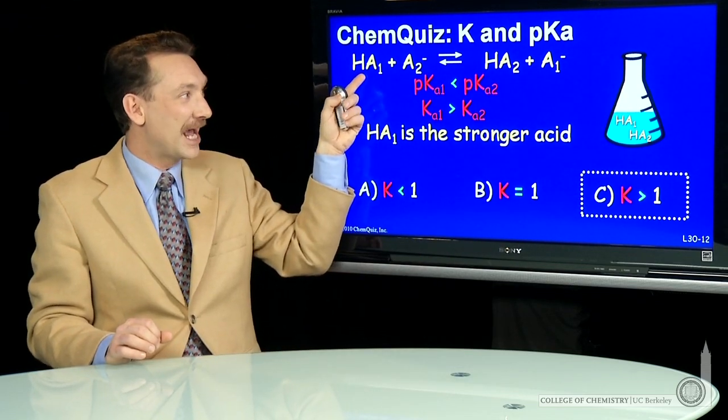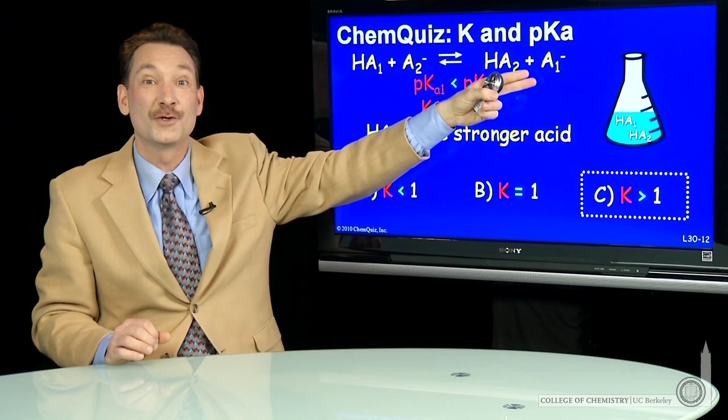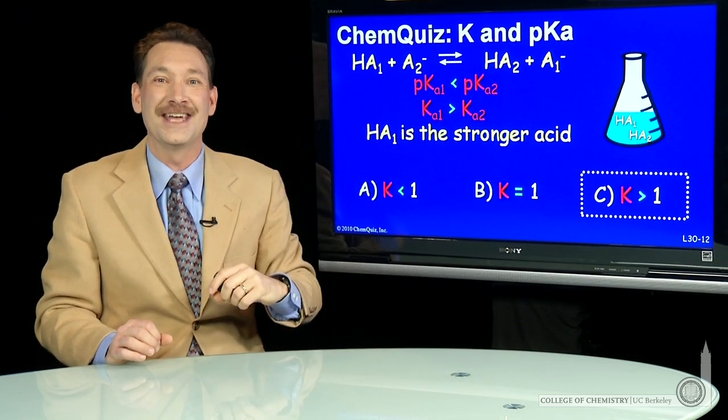HA1, stronger acid, forces this towards products. That's a k larger than 1.